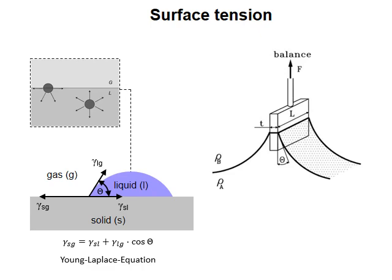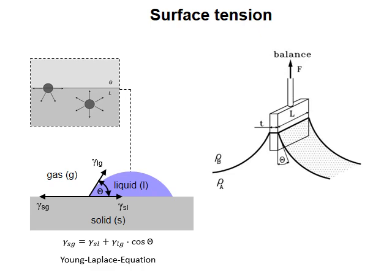A liquid meniscus will climb up the wall of the plate. You might be surprised, but there is actually a force F pulling the plate into the water. This force arises from surface tension and we can measure it with a scale.